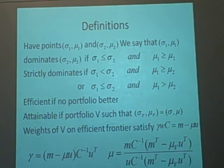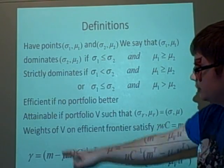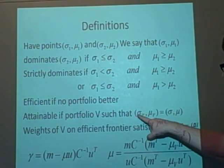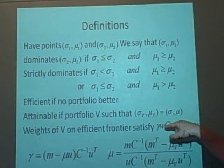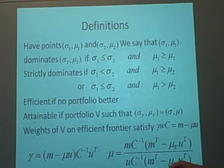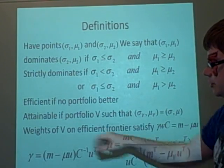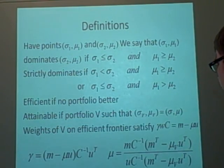Right, we say it's attainable, which is another definition, if the portfolio V, if we have sigma V, mu V is equal sigma mu. So we already know what's going to happen. We've seen this kind of scenario before, so it's attainable, we can work out everything.